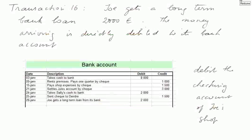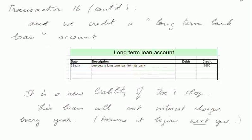Transaction 16: Joe gets a long-term bank loan of 2,000 euros, arriving directly into the bank account. The bank account is debited 2,000 euros, bringing the bank balance to 5,000 euros. A long-term bank loan account is credited 2,000 euros — this is a new liability of Joe's shop. It will incur interest charges, but we assume those begin next year. The capital repayment schedule is not specified here.